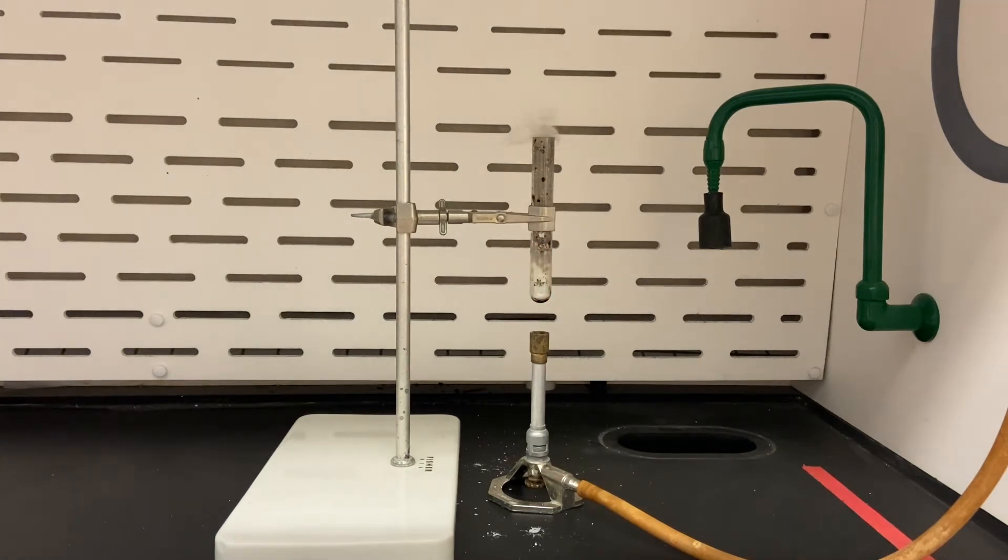Okay, so the reaction that you just observed was the oxidation of the sugar in the skittle. So once we allow that tube to cool what we're going to find is there's a big fat piece of carbon left in the tube after it reacted with potassium chloride after it underwent its oxidation.